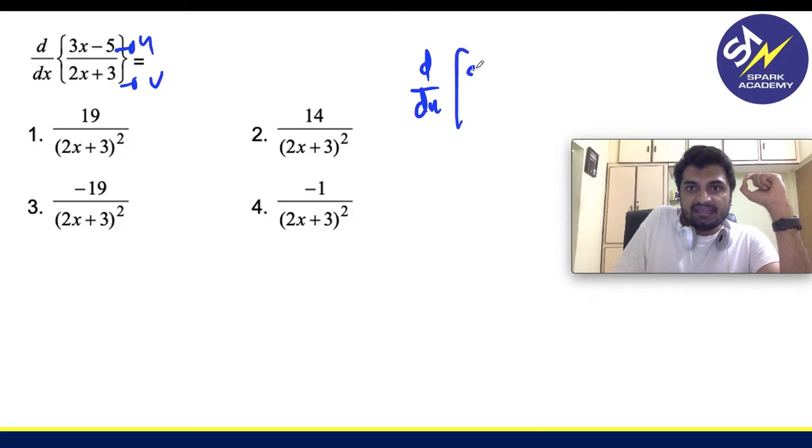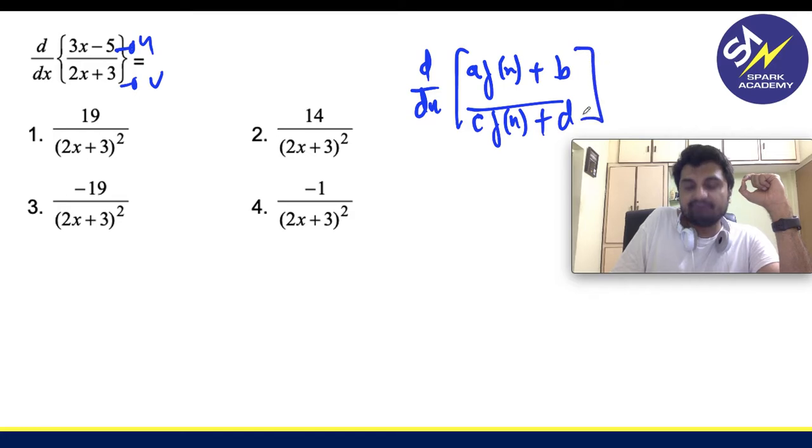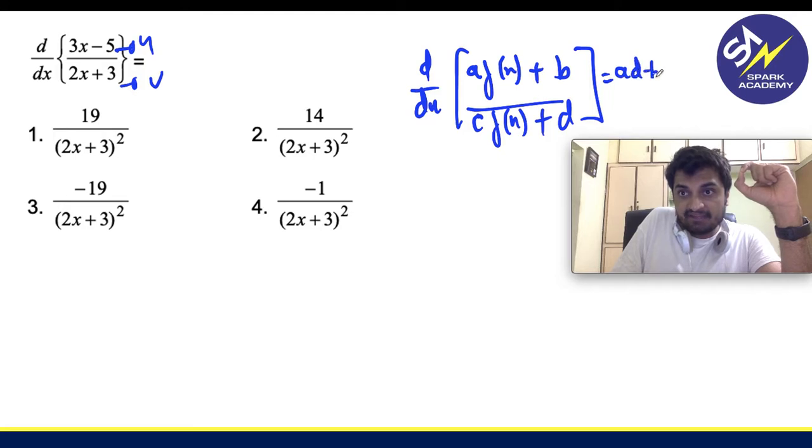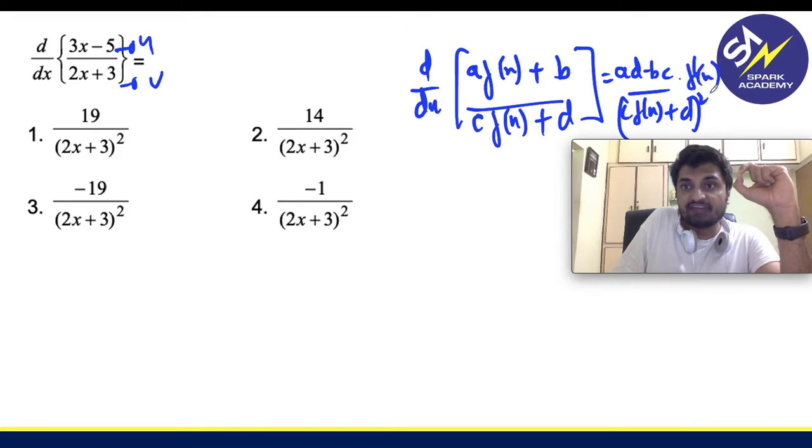[a·f(x) + b] whole divided by [c·f(x) + d], this can be written as (ad - bc) by [c·f(x) + d] whole square into f dash of x.